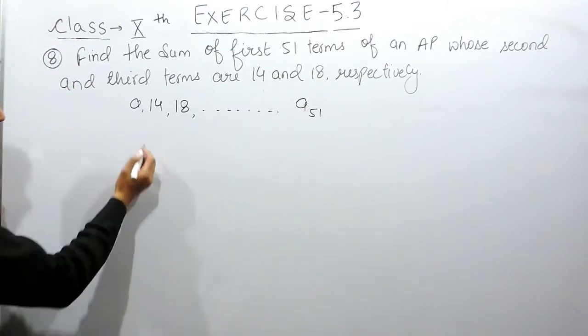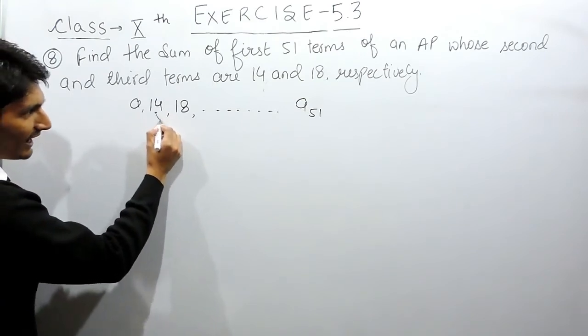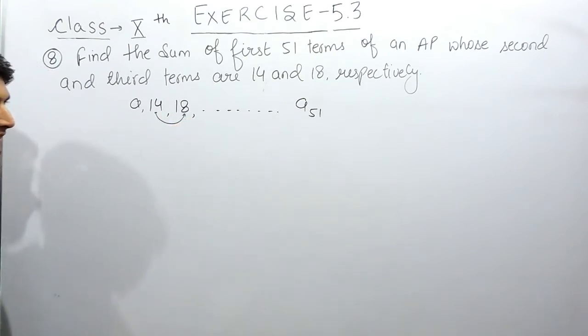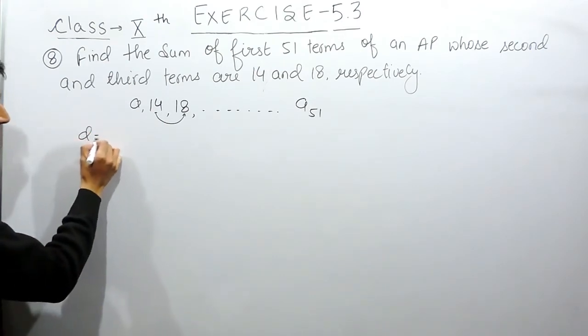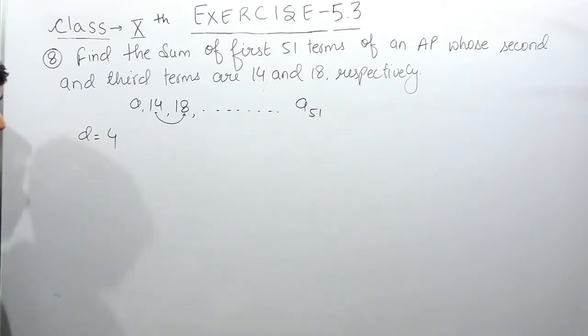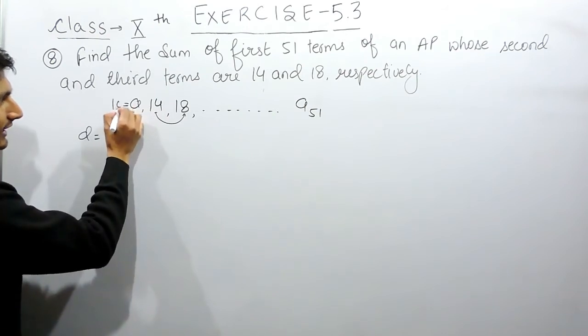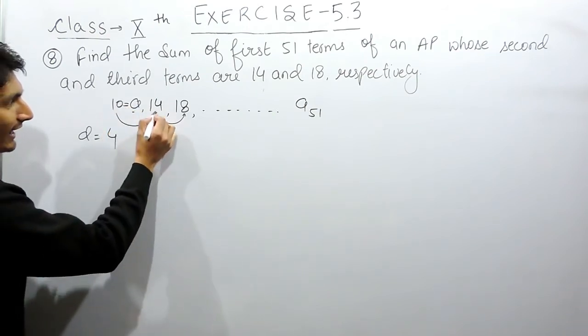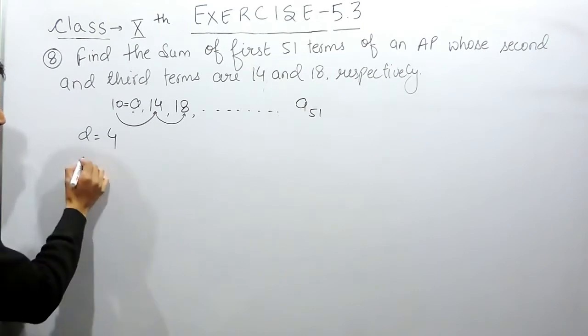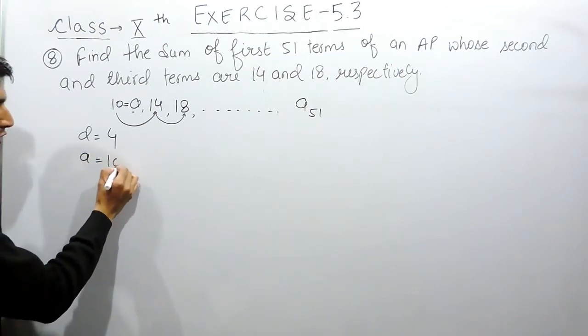If this is the second term, obviously I have added 4 to get the third term. So one thing is clear that the common difference must be equal to 4. So the first number must be equal to 10. Then only, if this number is 10, then only I will add 4 and I will get the second number. So here the first number must be equal to 10.